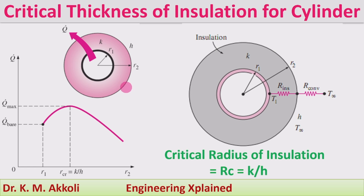Beyond the critical thickness, the reduction in heat transfer will take place. For small cables and wires, we commonly know that after adding insulation heat transfer should reduce, but up to the critical thickness — even though you are adding an insulation layer — the rate of heat transfer will go on increasing, and it reduces only after the critical thickness of insulation.